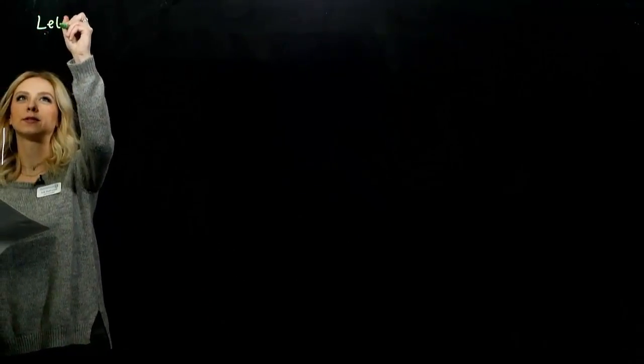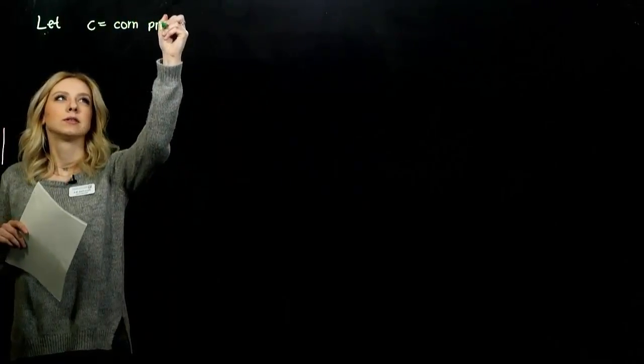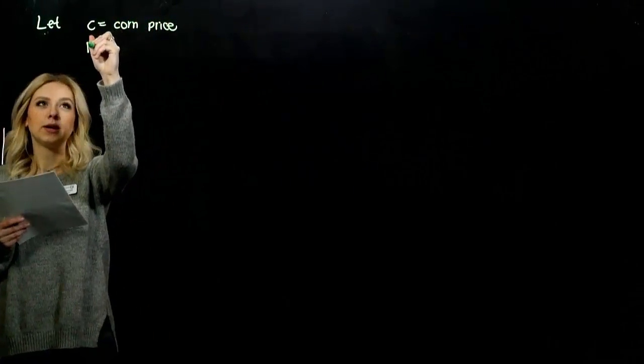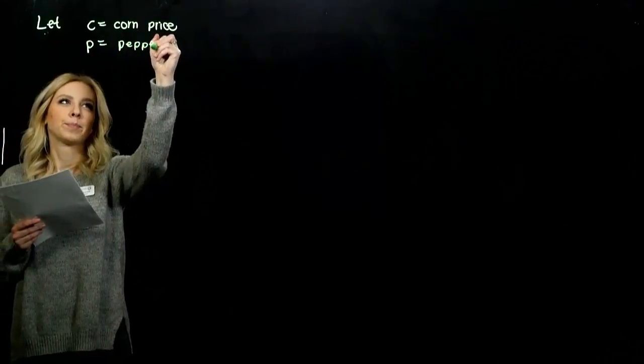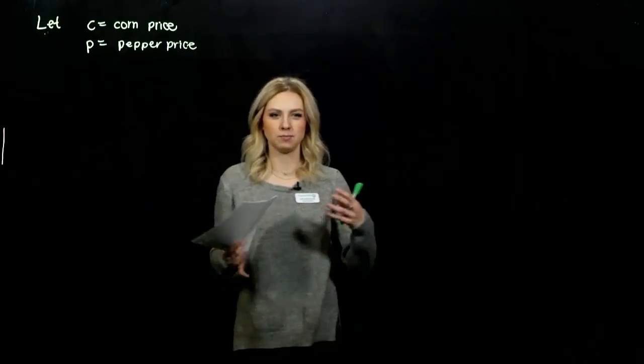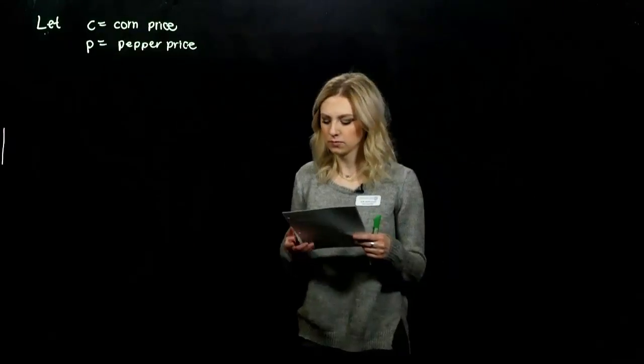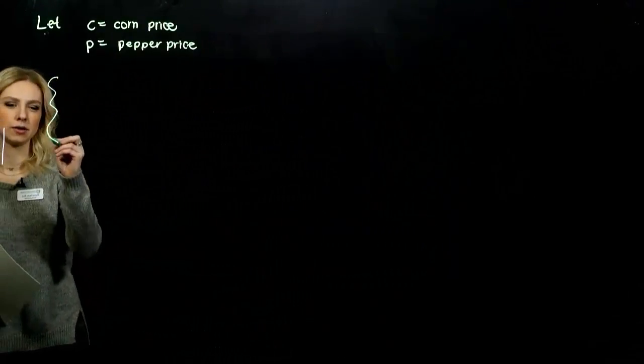So we have to build a system, solve it, and we are asked to find one ear of corn and one sweet pepper. I'm going to first of all assign variables to our unknowns. That should always be our first step. I'm going to let C be the corn price, and P be the pepper price. Kind of intuitive. But that way, we can start building systems using these variables instead of writing out long sentences.